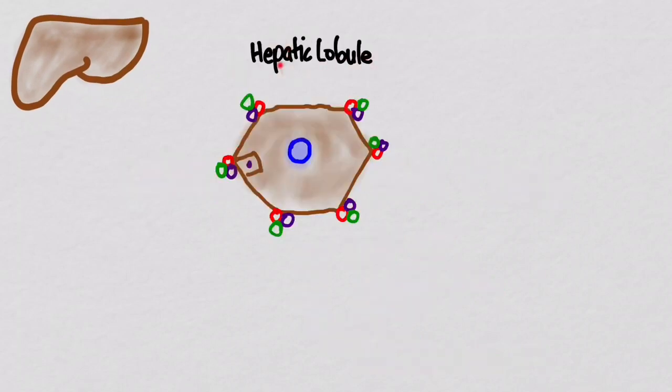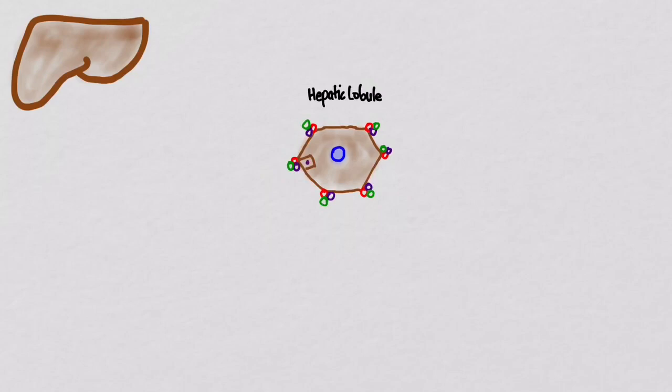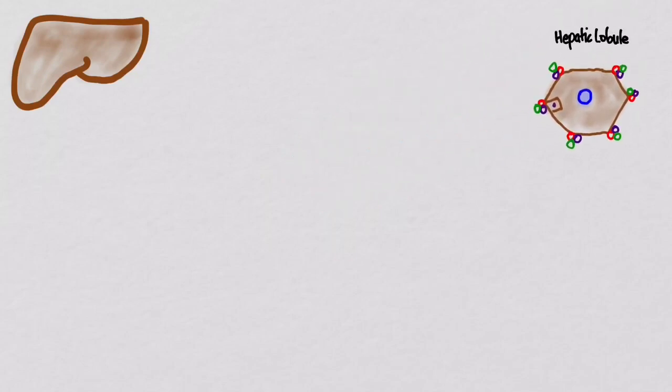You'll remember the hepatic lobule, which is this hexagonal structure filled with hepatocytes. I didn't draw all of them in here, but you can see one here, with a central vein, and we have this trio over here, of a bile duct, which I drew in green, a portal arteriole, which I drew in red, and then the portal venule, which I drew in purple. So now let's take a moment to go through all the various tests and what they mean.